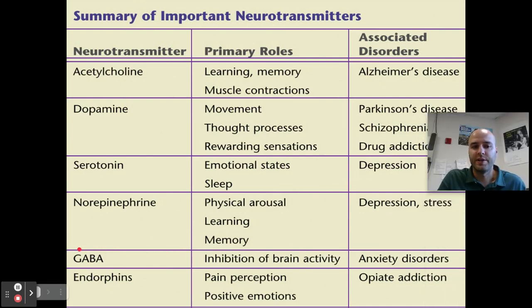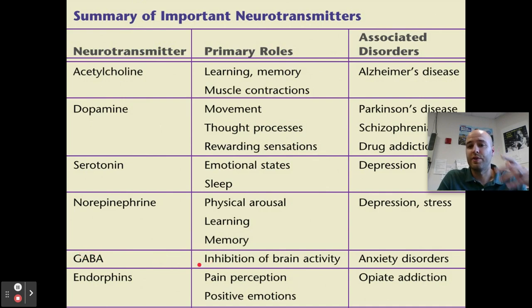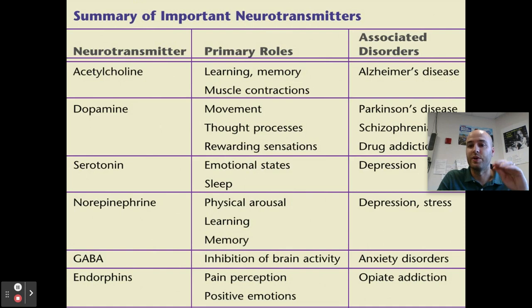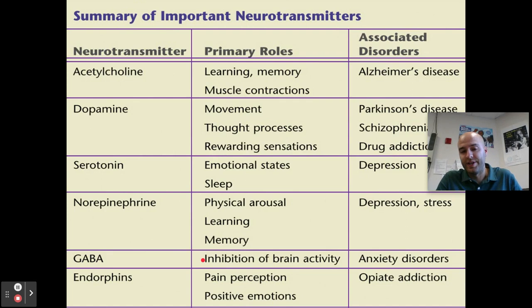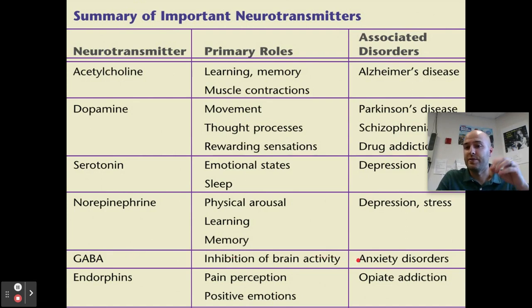GABA helps inhibit our brain activity — it is an inhibitory neurotransmitter. Most neurotransmitters we've discussed are excitatory, but GABA helps to slow down brain activity and slow down or eliminate some messages neurons are sending. An undersupply of GABA can lead to anxiety disorders: your brain can't slow down, thoughts rush through your mind, and you can't calm that anxiety.